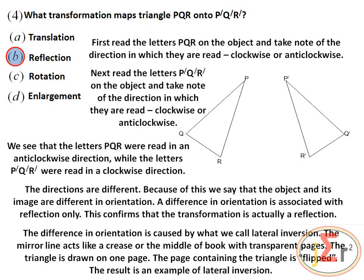The difference in orientation is caused by lateral inversion. The mirror line acts like a crease or the middle of a book with transparent pages — the triangle is drawn on one page, and when the page is flipped, the result is lateral inversion, which is the effect of reflection on an object.